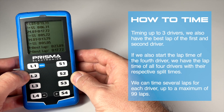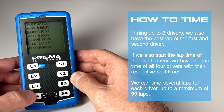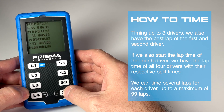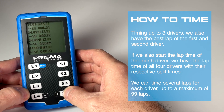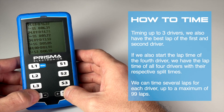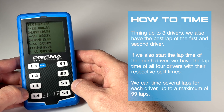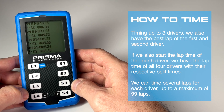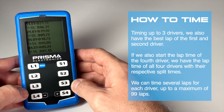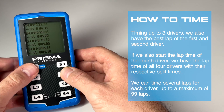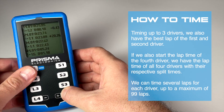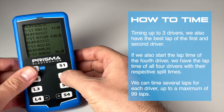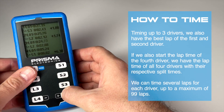Timing up to three drivers, we also have the best lap of the first and second driver. If we also start the lap time of the fourth driver, we have the lap time of all four drivers with their respective split times. We can time several laps for each driver, up to a maximum of 99 laps.